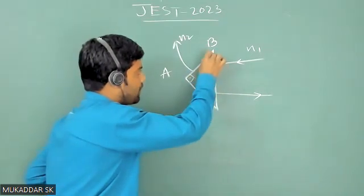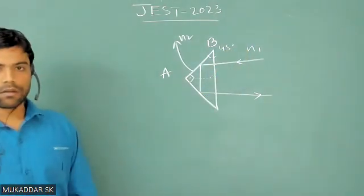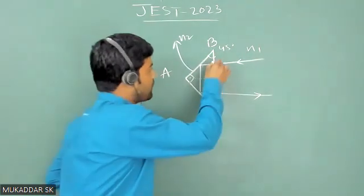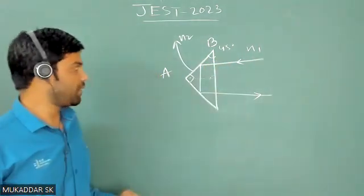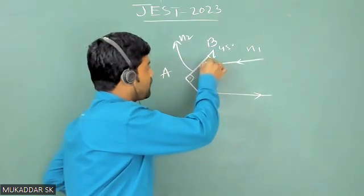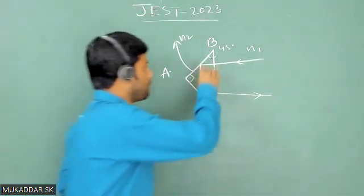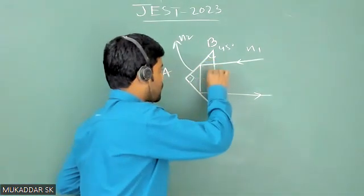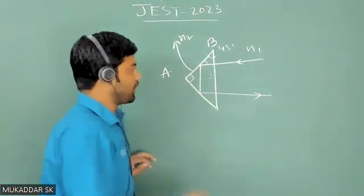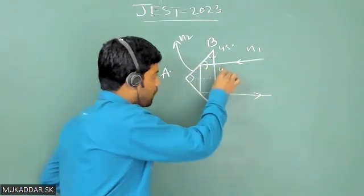Now this light beam is incident perpendicular to the base. Obviously this angle will be 90 degrees. This is 90 degrees, this is 45 degrees, so obviously this angle will be 45 degrees. Now if you draw a perpendicular here, since this angle is 45 degrees, obviously the angle of incidence of this beam becomes 45 degrees.